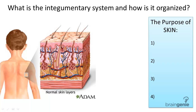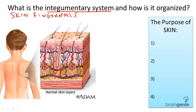So what is the structure and function of the integumentary system? The integumentary system is basically made up of your skin, your fingernails, and your hair. For the purposes of this video, we're going to go through the structure and function of the skin. You can check out fingernails and hair in another video.